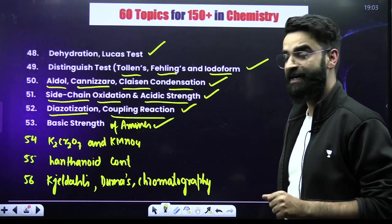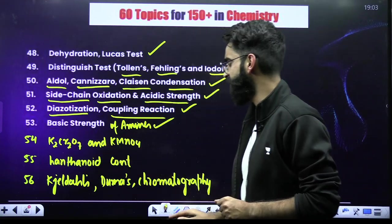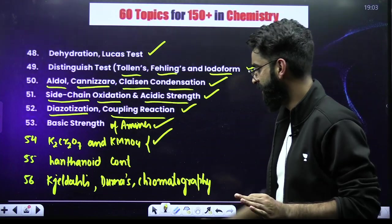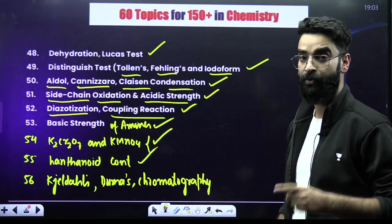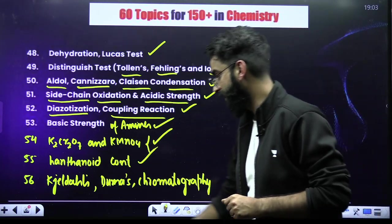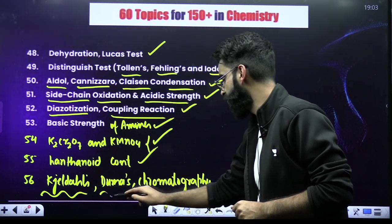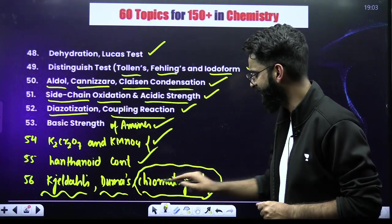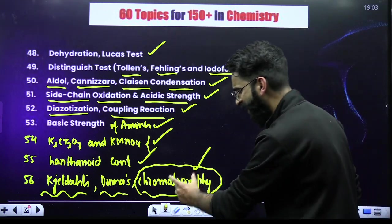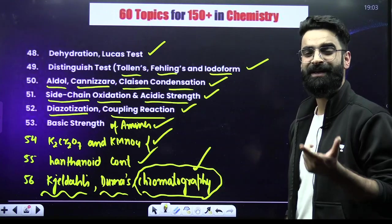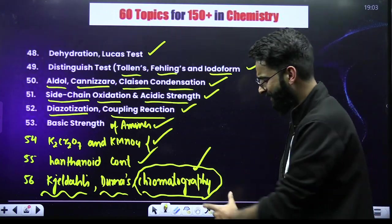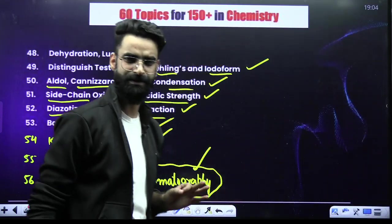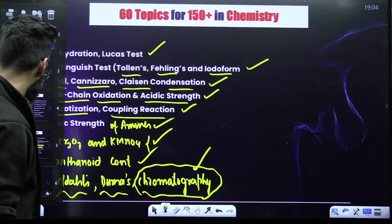When it comes to D and F block elements: K₂Cr₂O₇ and KMnO₄ — these are the two compounds from which questions have been frequently asked. Lanthanide contraction is one more. And in the organic part again: Kjeldahl's method, Dumas method, and chromatography. For chromatography, you need not go into detail — there is just one short paragraph in your NCERT; follow that, which is more than sufficient. So this was all about Chemistry.